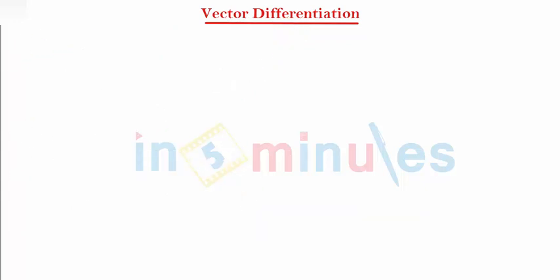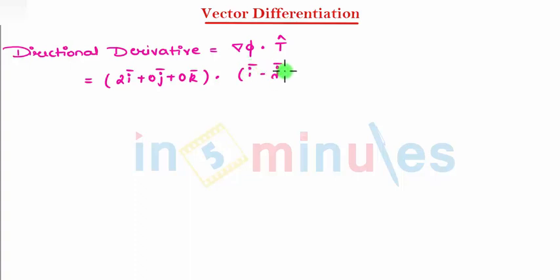Directional derivative is equal to del phi dot t cap. My del phi is 2i bar plus 0j bar plus 0k bar. Let's get dot product with i bar minus j bar plus √2 k bar, and this gets divided by 2.